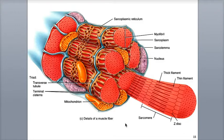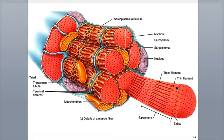Inside the myofibrils are even smaller proteins called filaments, or myofilaments. These filaments play a major role in muscle contraction, and there are two types of filaments: thin filaments, made up of the protein actin, and thick filaments, made mostly of the protein myosin.